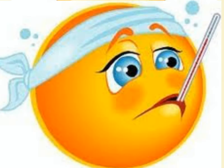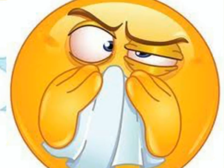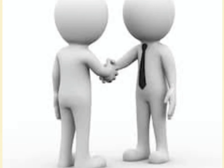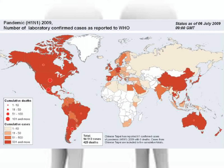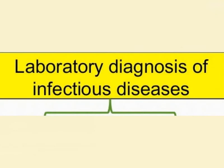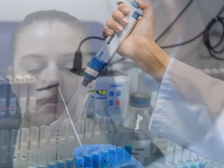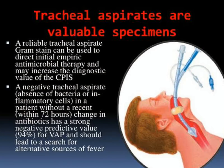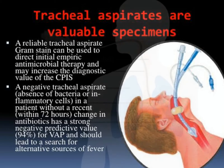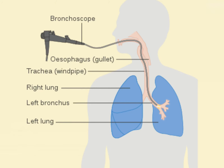Diagnosis is based on a person presenting flu-like symptoms who has been exposed to a known infected person, or exposed to birds or pigs in an area with an avian or swine flu outbreak. Lab diagnosis is done using RT-PCR or nasopharyngeal swab. Patients with lower respiratory tract illness can have samples taken from endotracheal aspirates or bronchoalveolar lavage fluid.